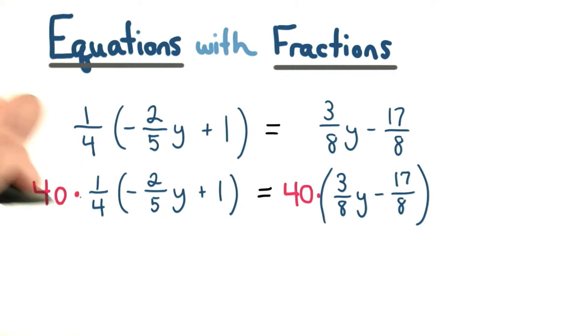40 times a fourth is 40 fourths or 10. I know that because 40 divided by 4 makes 10. This also makes sense because I can think of 40 over 1 and then divide 40 and 4 both by 4, and I'll get 10 over 1, or 10.